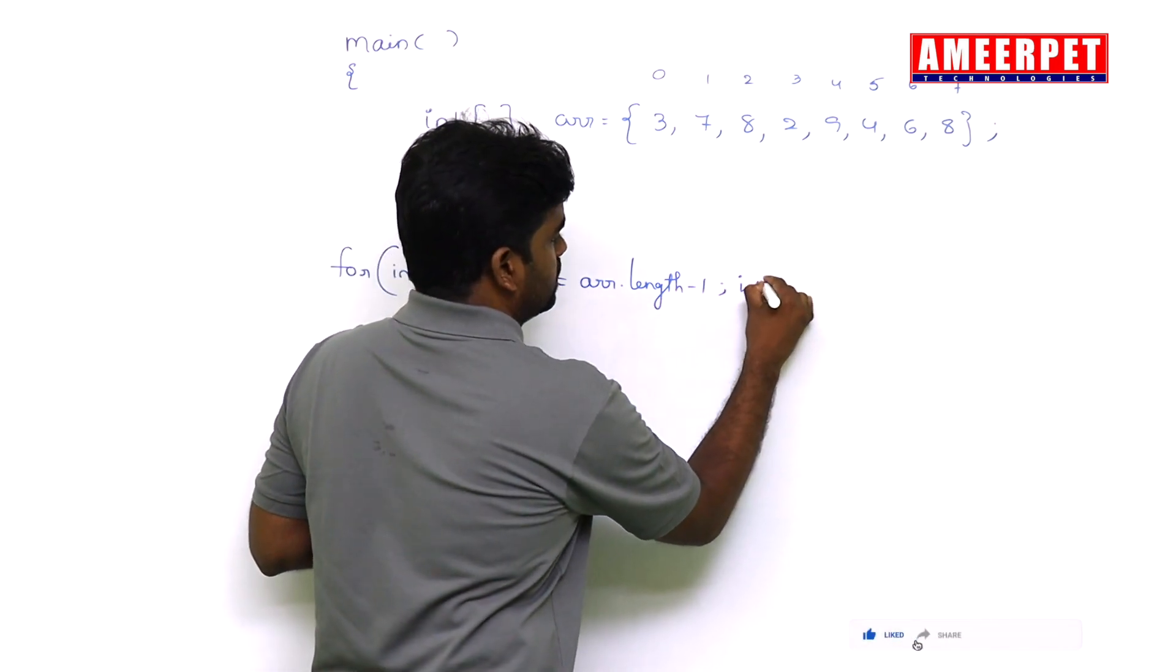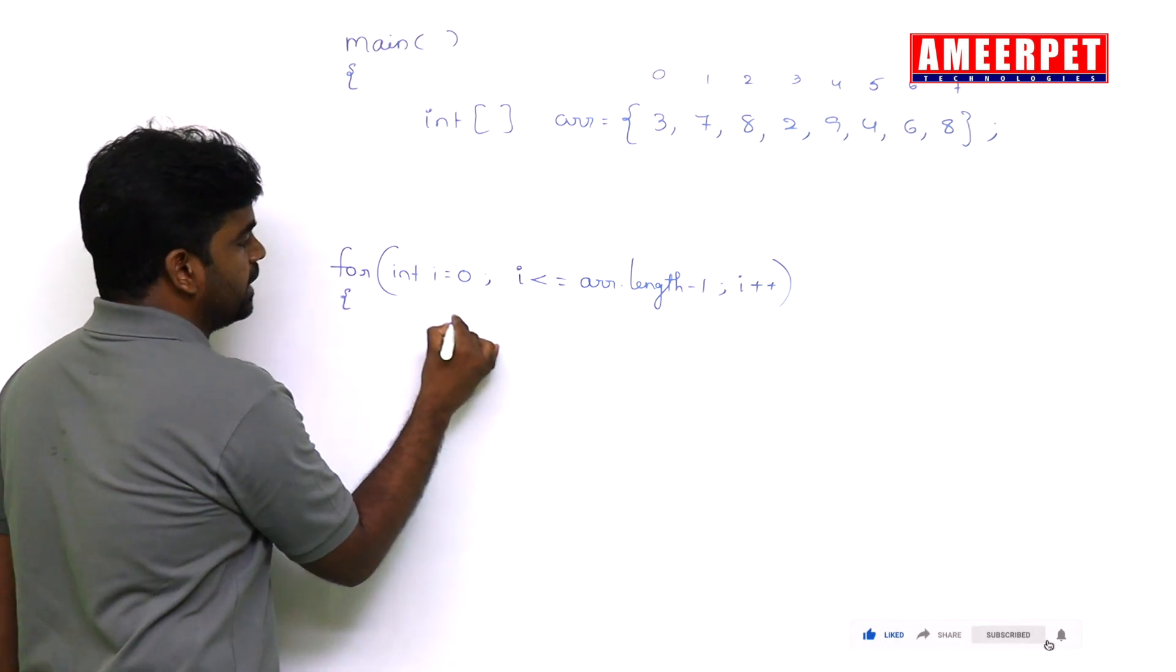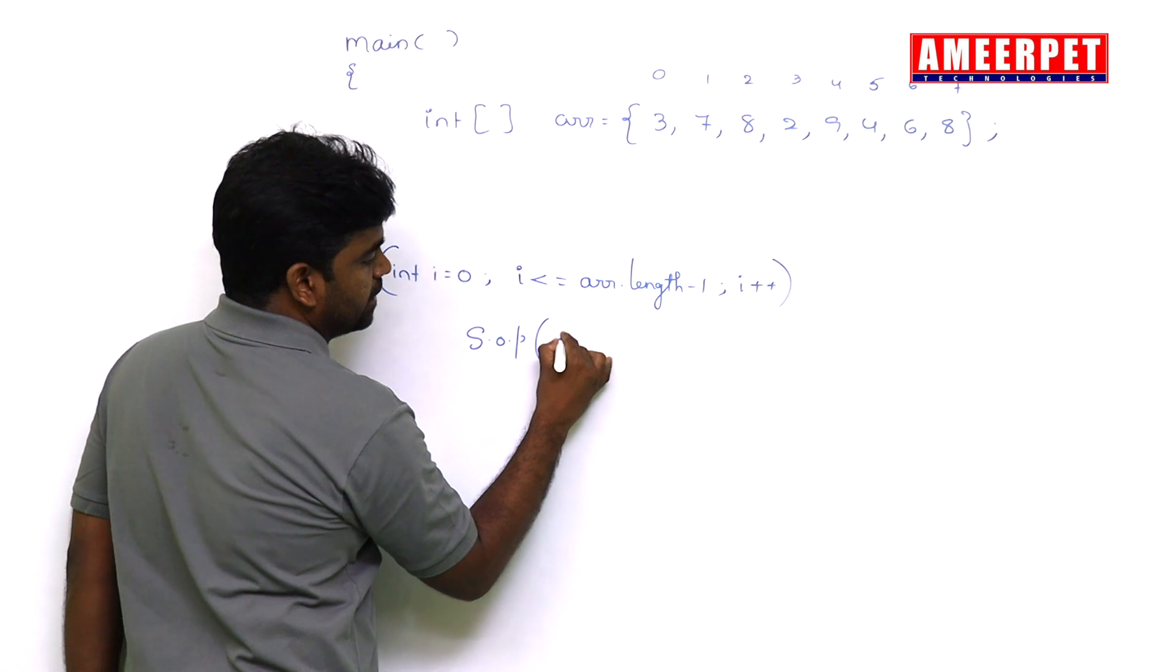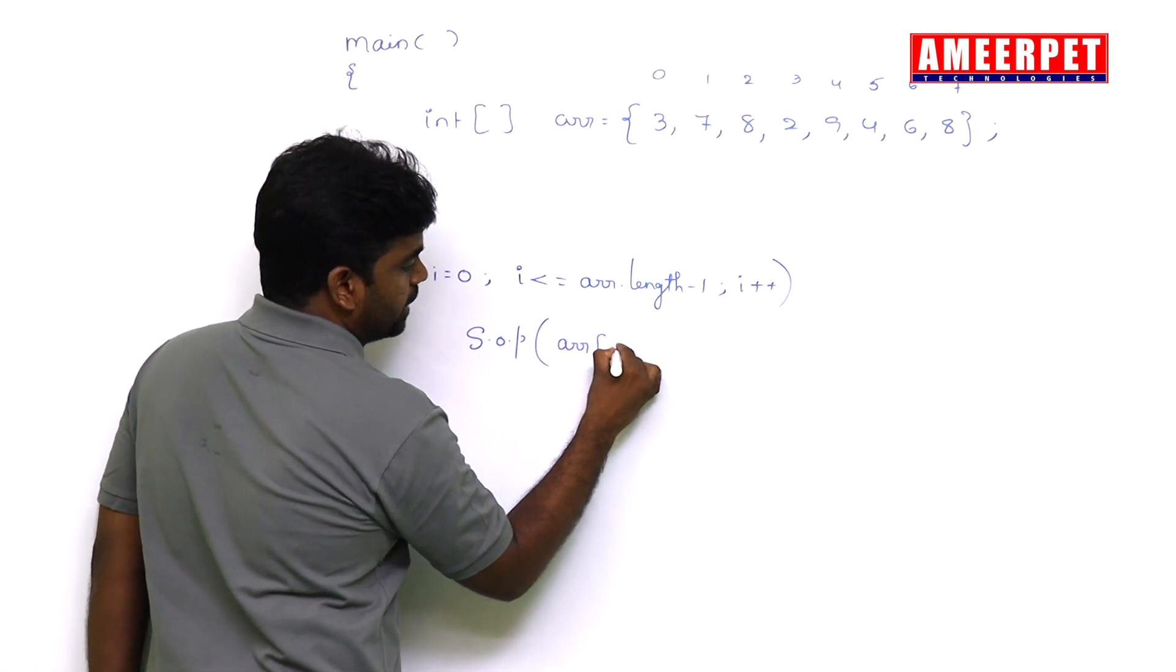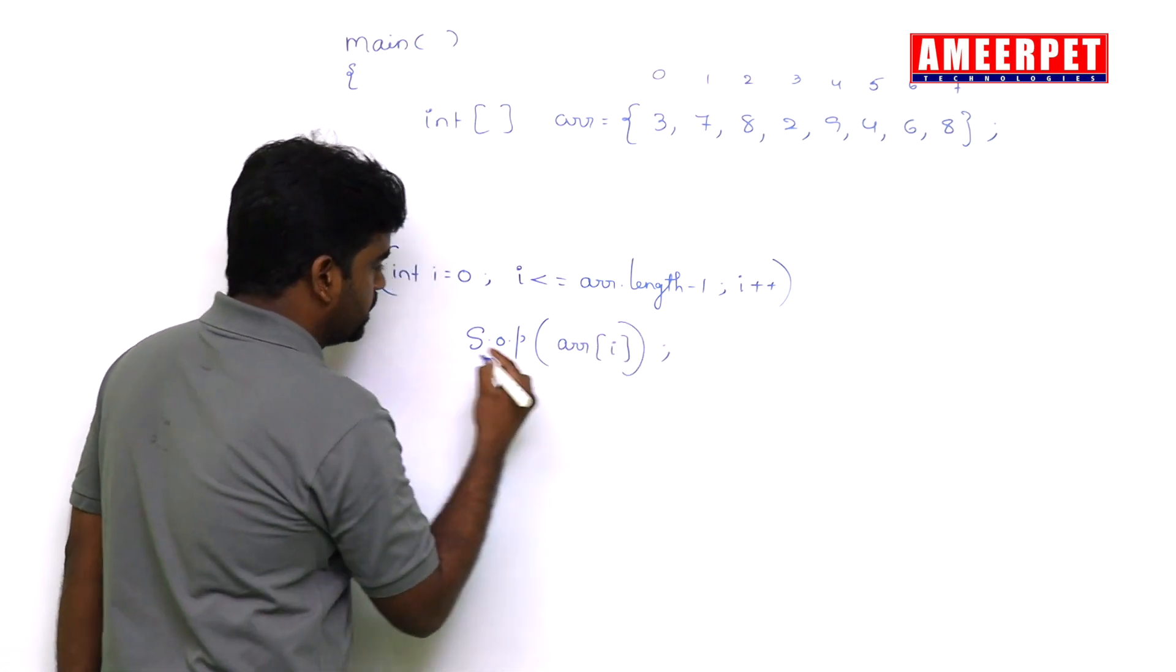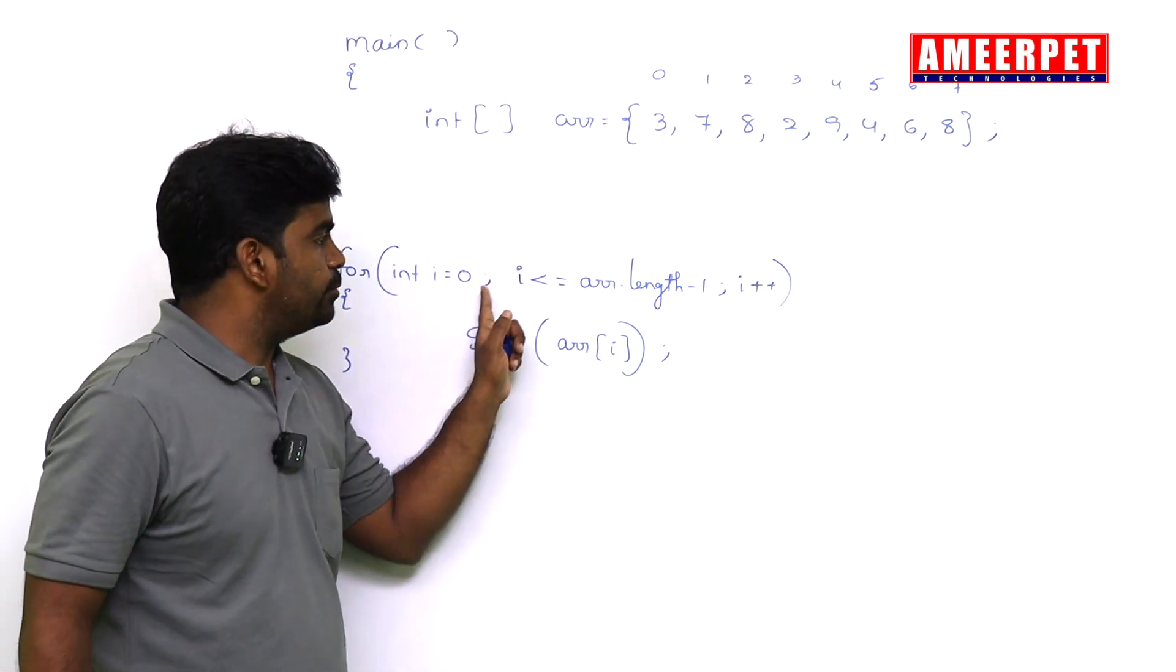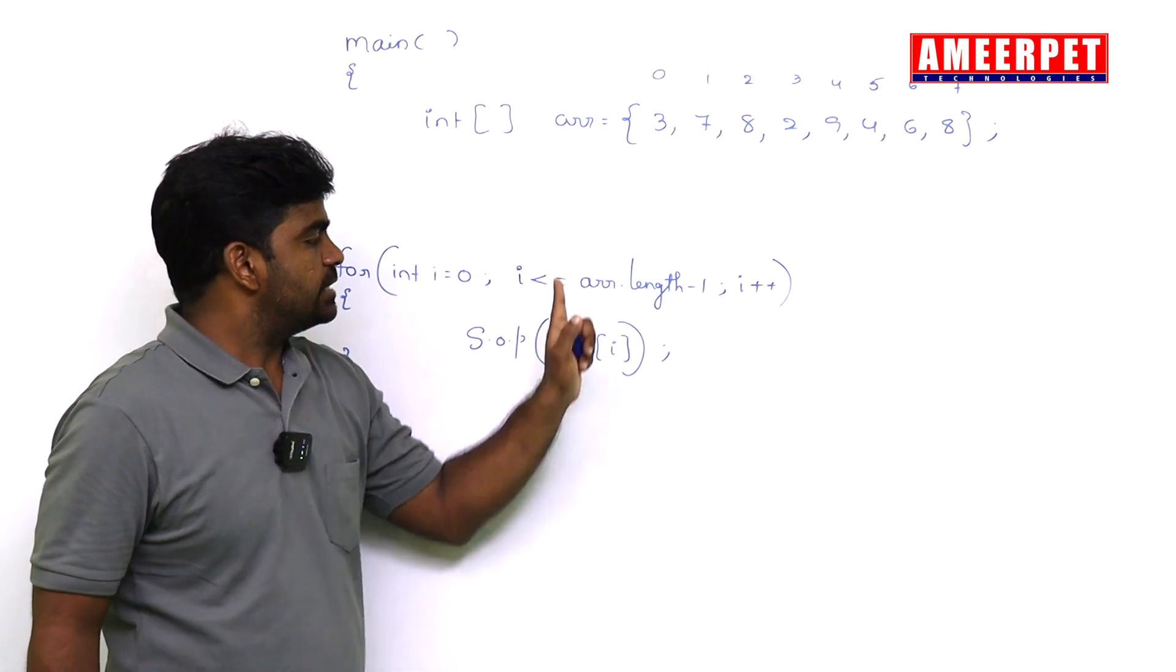i plus plus. It will repeat and every time we are printing System.out.println arr[i]. i value zero is zeroth location element three, i value becomes one, first location element seven, second location element eight, like that.